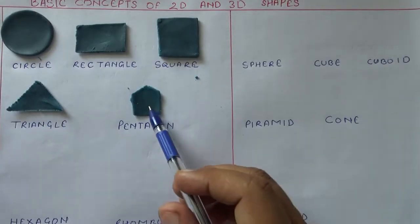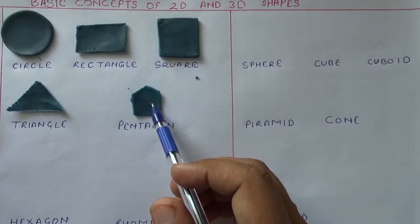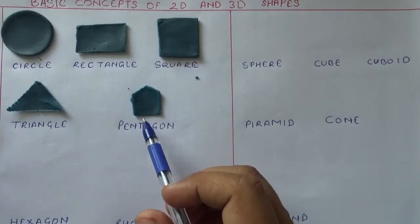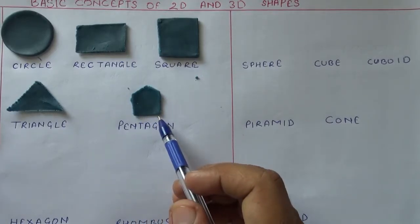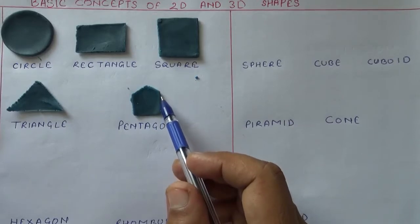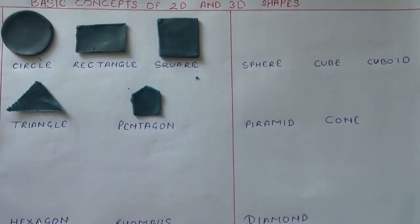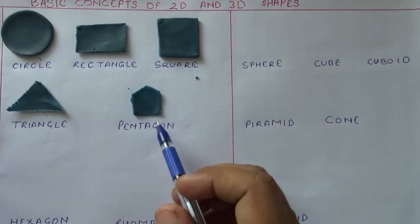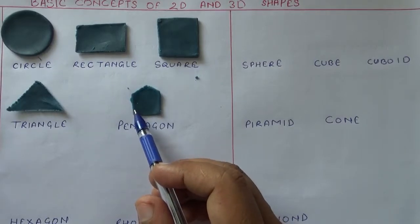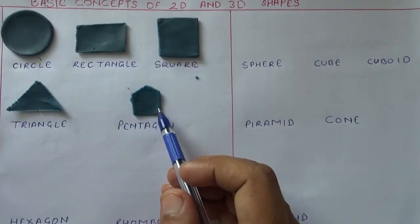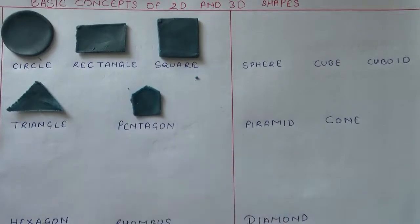Pentagon is a two-dimensional shape with five sides: side one, two, three, four, five — and five angles: one, two, three, four, five.